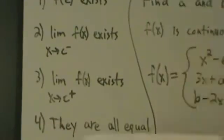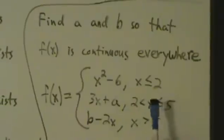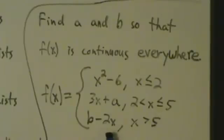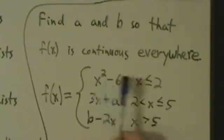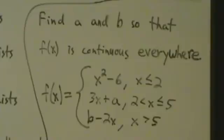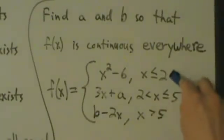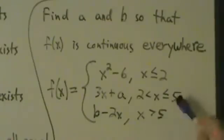Let's see an example. Find a and b so that f of x is continuous everywhere, where f of x is a piecewise function: x squared minus 6 if x is less than or equal to 2; 3x plus a if 2 is less than x is less than or equal to 5; and b minus 2x if x is greater than 5. Each piece is a polynomial, so they're continuous everywhere on their own. We only have to worry about the break points at x equals 2 and x equals 5.